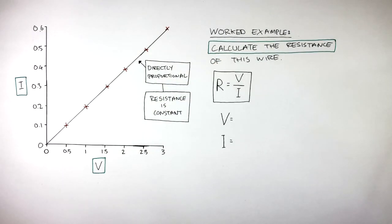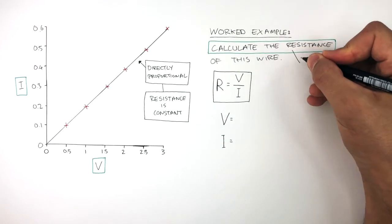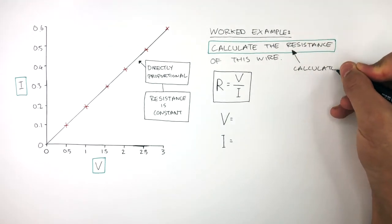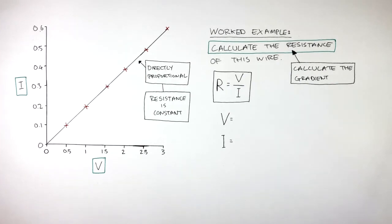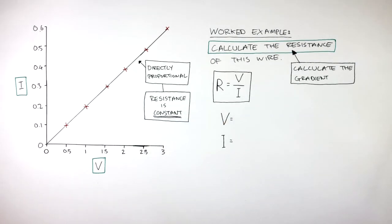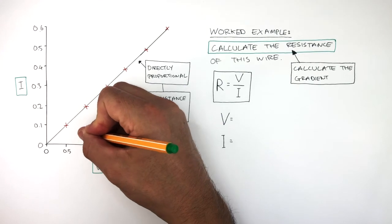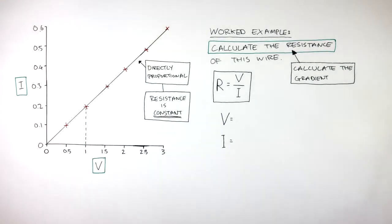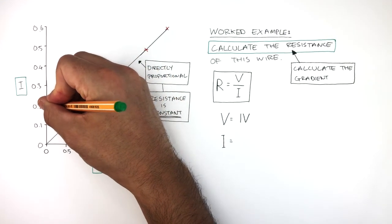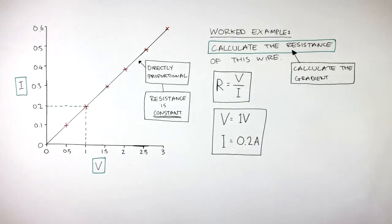The resistance does not change as long as the temperature is constant as well. So because the resistance does not change, all we need to do is calculate the gradient in order to find out what the resistance is. As the resistance is constant, we can use any potential difference value and current value. I've chosen to use 1 volt as shown on the graph, so the potential difference is 1 volt, and if we then go across, the current is 0.2 amps.